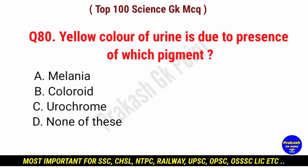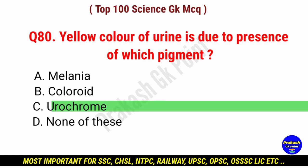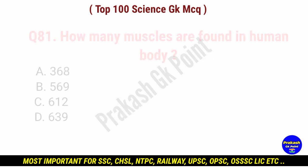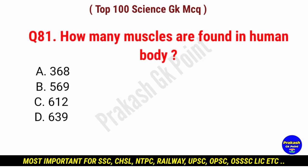Yellow color of urine is due to presence of which pigment? Answer: option C, urochrome.